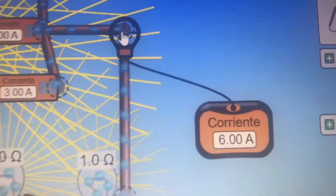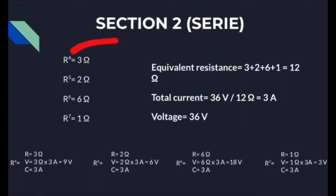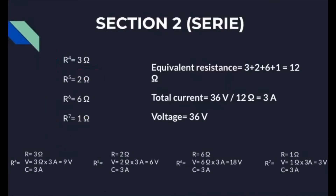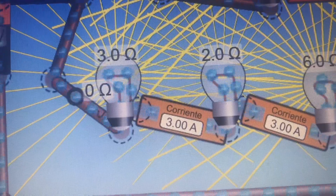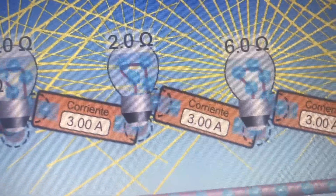The simulation matches our results for the parallel section. For section 2, the series is composed by four resistances: the first one of 3 ohms, the second one of 2 ohms, the third one of 6 ohms, and the fourth one of 1 ohm. Unlike the parallel section, the current for each resistance maintains the same, as we can see in the simulation.